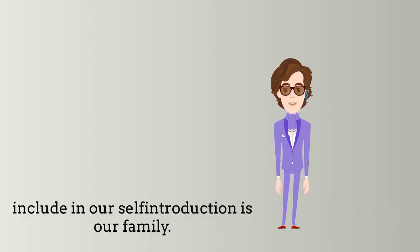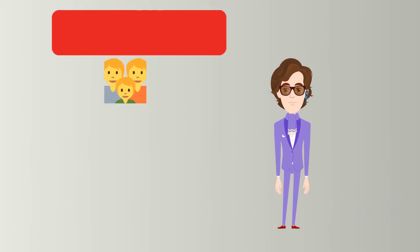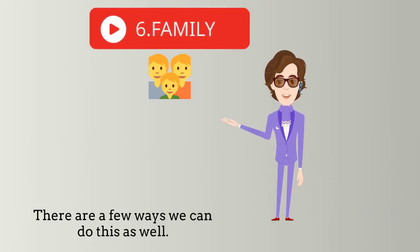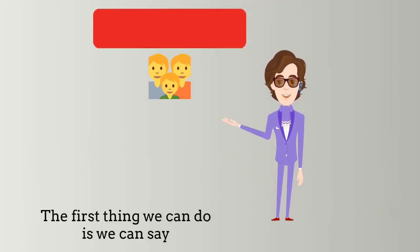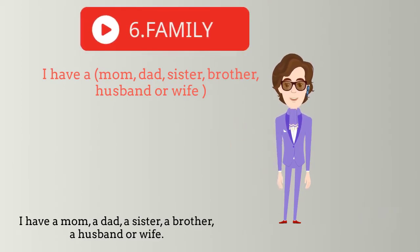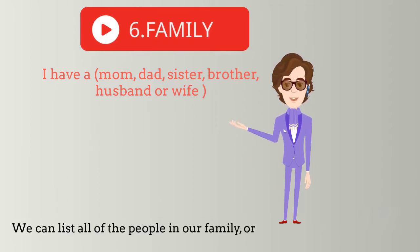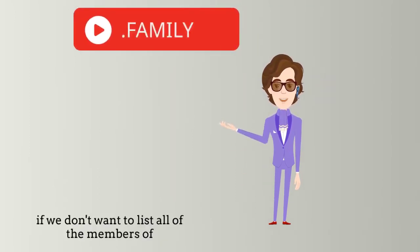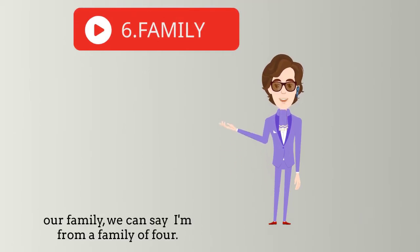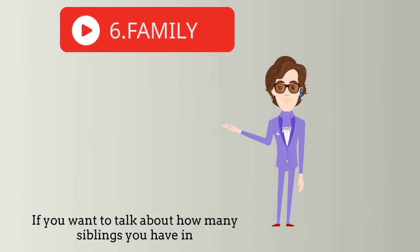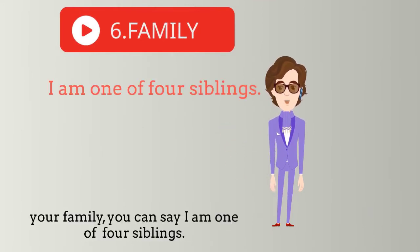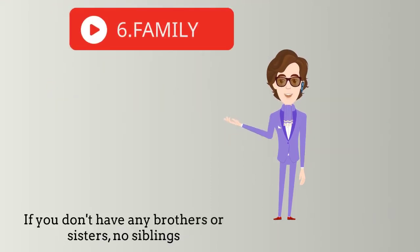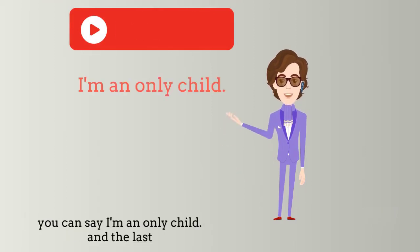The sixth thing we can include in our self-introduction is our family. The first way is to list family members: 'I have a mom, a dad, a sister, a brother, a husband or wife'. Or, if we don't want to list all members, we can say 'I'm from a family of four'. If you want to talk about siblings, you can say 'I am one of four siblings'. If you are an only child and don't have any brothers or sisters, you can say 'I'm an only child'.